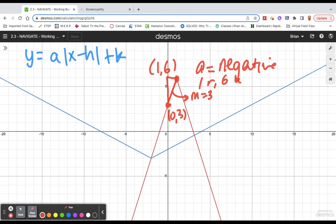Remember that the generic parent function y equals the absolute value of x has a slope of 1. And as we adjust the a, we are adjusting the slopes of those lines, the slopes of the two half lines that make up the v.